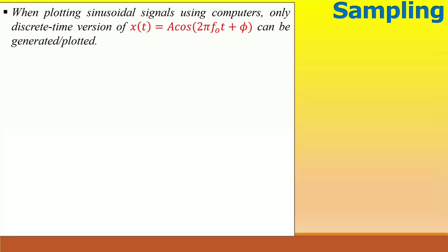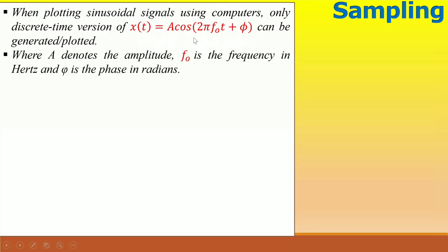The sine and cosine functions belong to the general class of signals used for modeling and interaction with systems and have many applications in communication systems, control systems, vibration analysis, and many others. When plotting sinusoidal signals using computers, only discrete time version of x(t) = A cos(2π f₀t + φ) can be generated and plotted. Where A denotes the amplitude, f is the frequency in radians per seconds or hertz and φ is the phase angle.